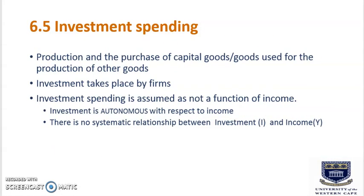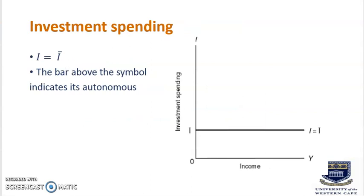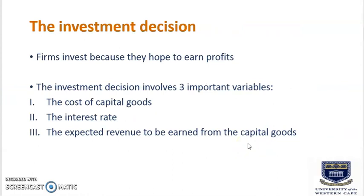Section 6.5: Investment Spending. Investment is the production and purchase of capital goods — goods used for the production of other goods. Investment takes place by firms and is assumed to not be a function of income. Investment is therefore autonomous with respect to income: I = Ī, where the bar indicates it is autonomous. The graph shows investment spending on the vertical axis and income on the horizontal axis, with a flat line representing autonomous investment. The investment decision involves three key variables: the cost of capital goods, the interest rate, and the expected revenue from capital goods.